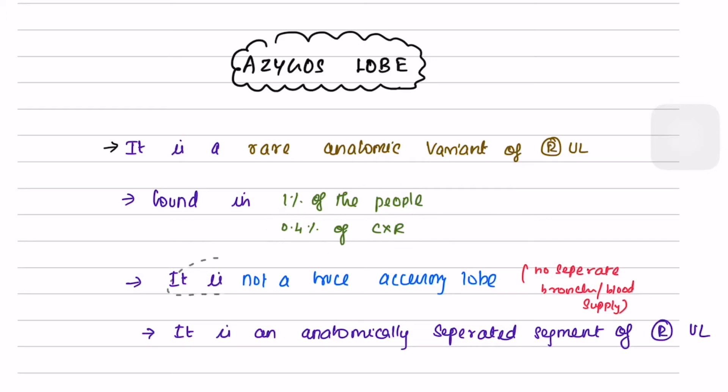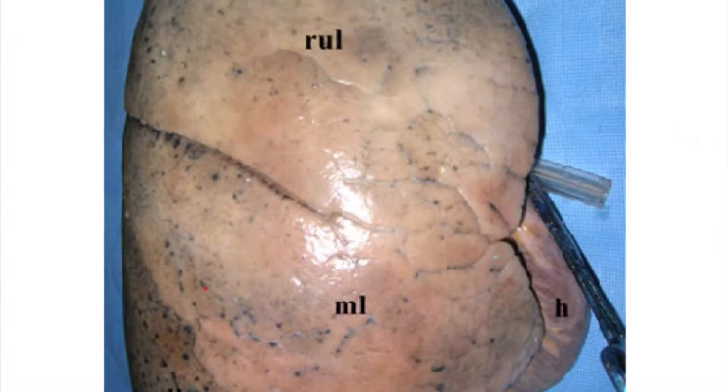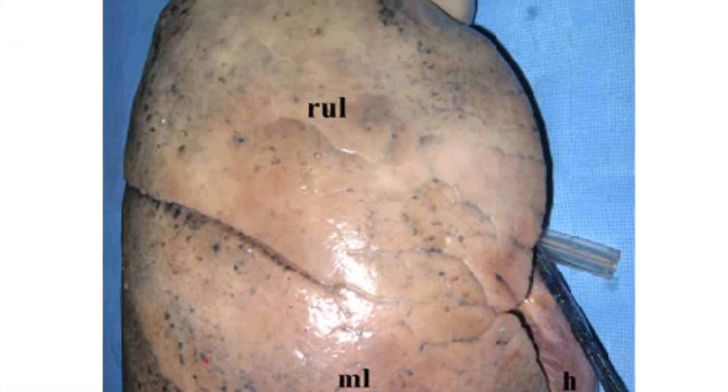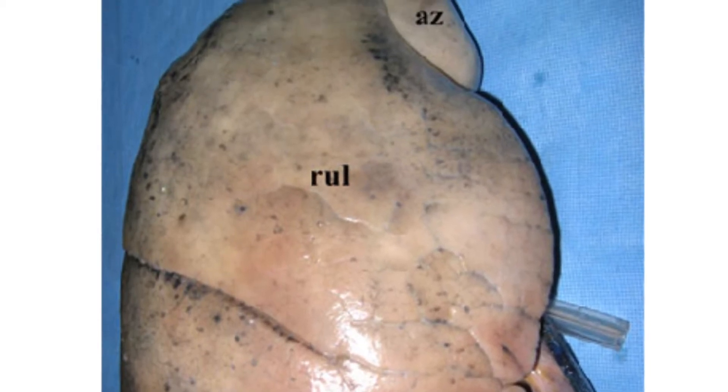It is not a true accessory lobe because it has no separate bronchus or blood supply. It is actually an anatomically separated segment of the right upper lobe.